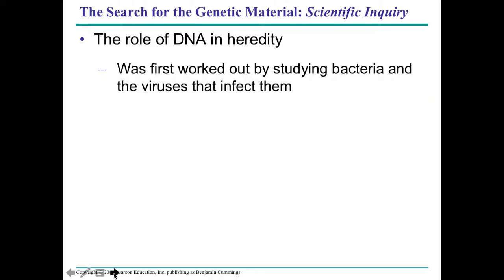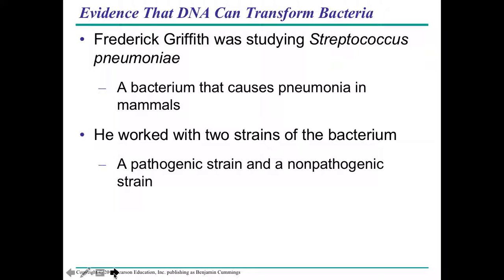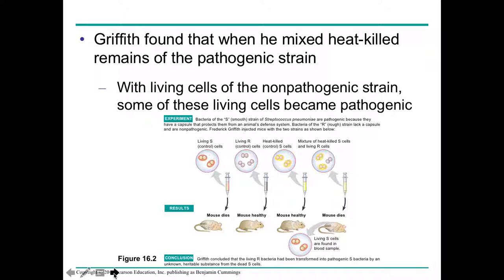To figure out that DNA was our hereditary material, scientists studied bacteria and viruses that infect them. Frederick Griffith worked with a person by the last name Avery, studying the bacteria Streptococcus pneumoniae, which causes pneumonia in mammals. He worked with two different types: a pathogenic strain, which is very harmful and makes you sick, and a non-pathogenic strain that infects you but is not as harmful.